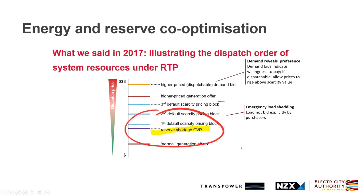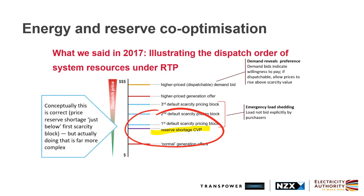The tricky part is maintaining the reserve shortage CVPs and the priority of reserve shortage ahead of energy scarcity. Conceptually we've kept that there, and as discussed in the 2019 consultation — which was in the pre-reading material — we've managed to find a way of maintaining those priorities with reasonable prices, though there's still some detail to work through.